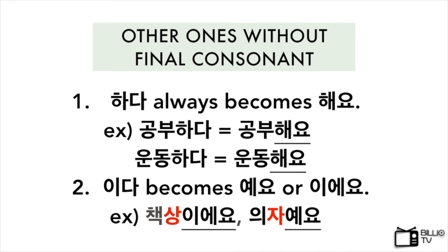In addition, I have two more to tell you. The first is 하다, which means 'to do.' Korean has many verbs with 하다, and 하다 always becomes 해요. The second one is 이다, which means 'to be.' Its conjugation depends on the noun it follows. If the last letter of the noun has a final consonant, it becomes 이에요. If it does not, it becomes 예요.